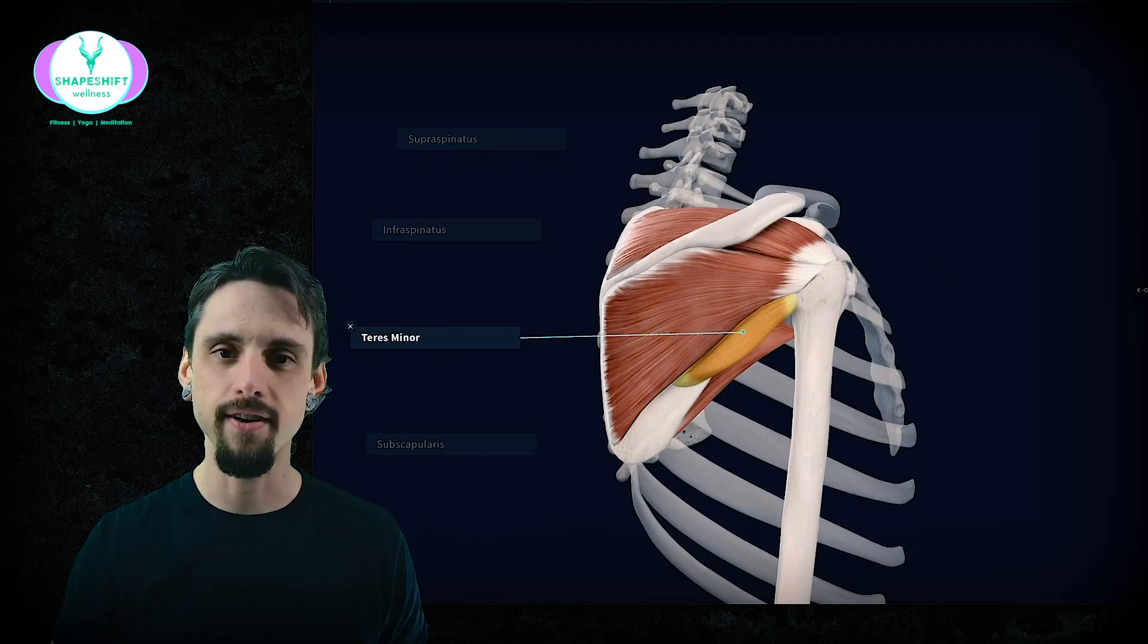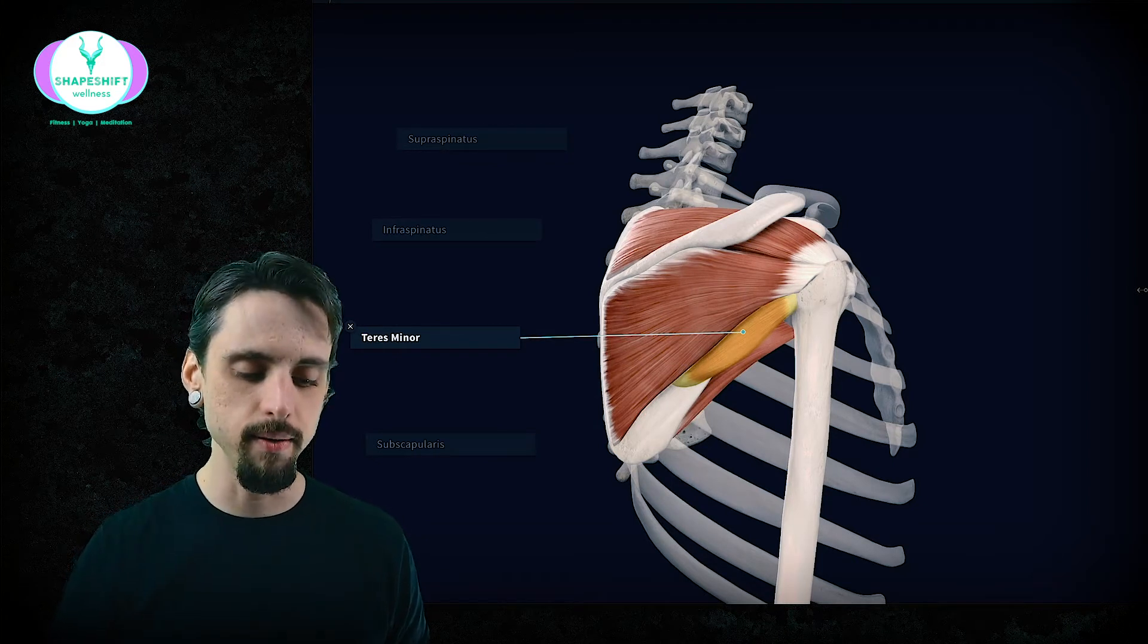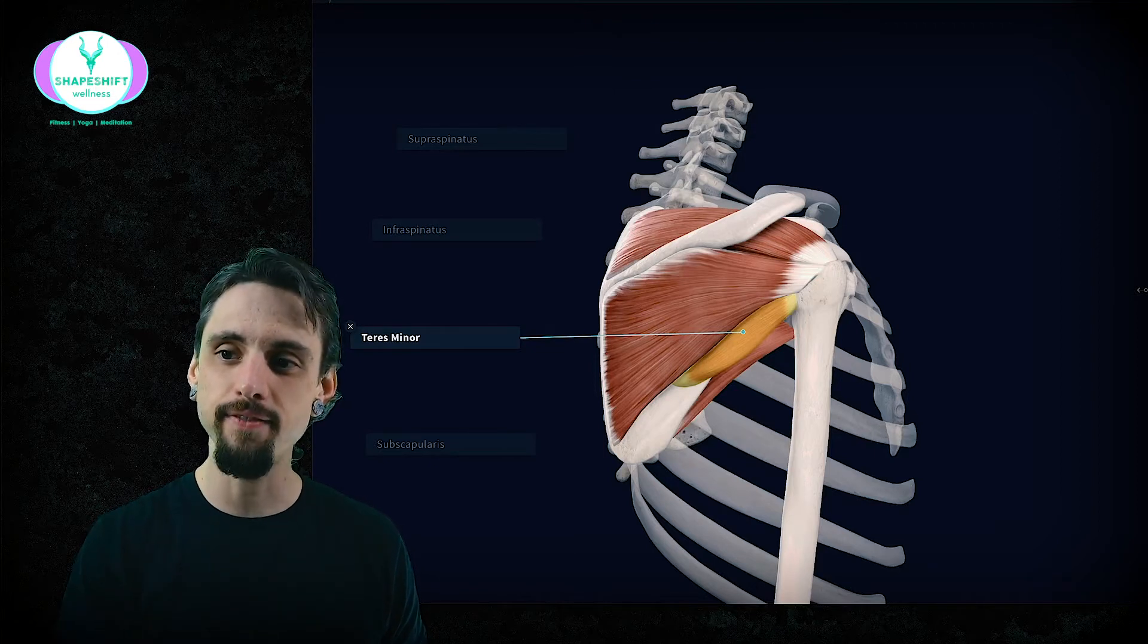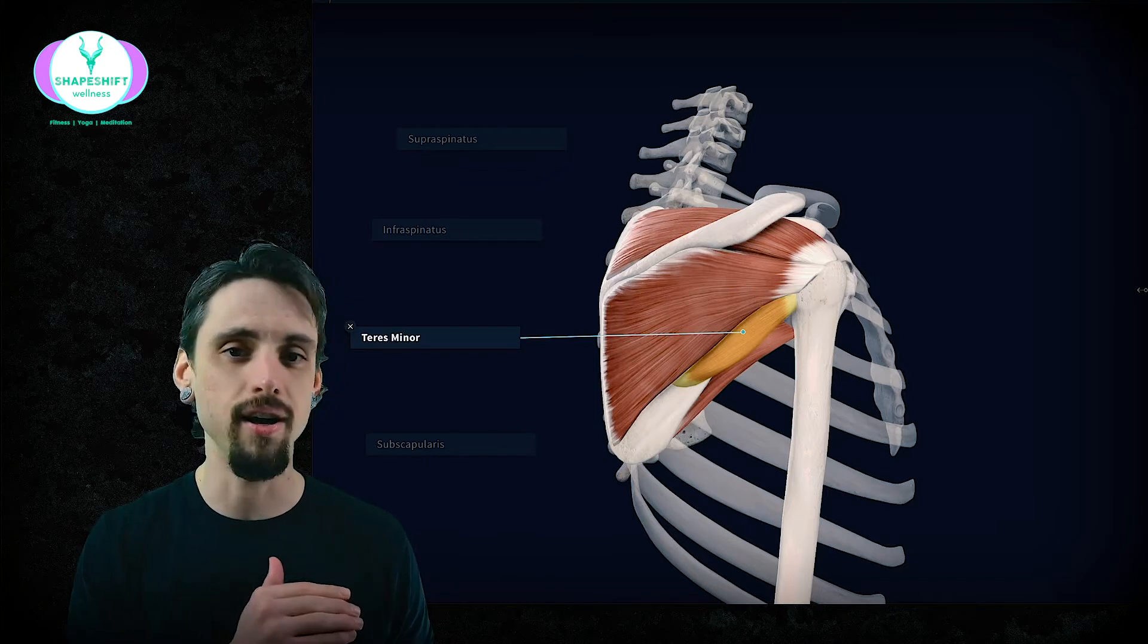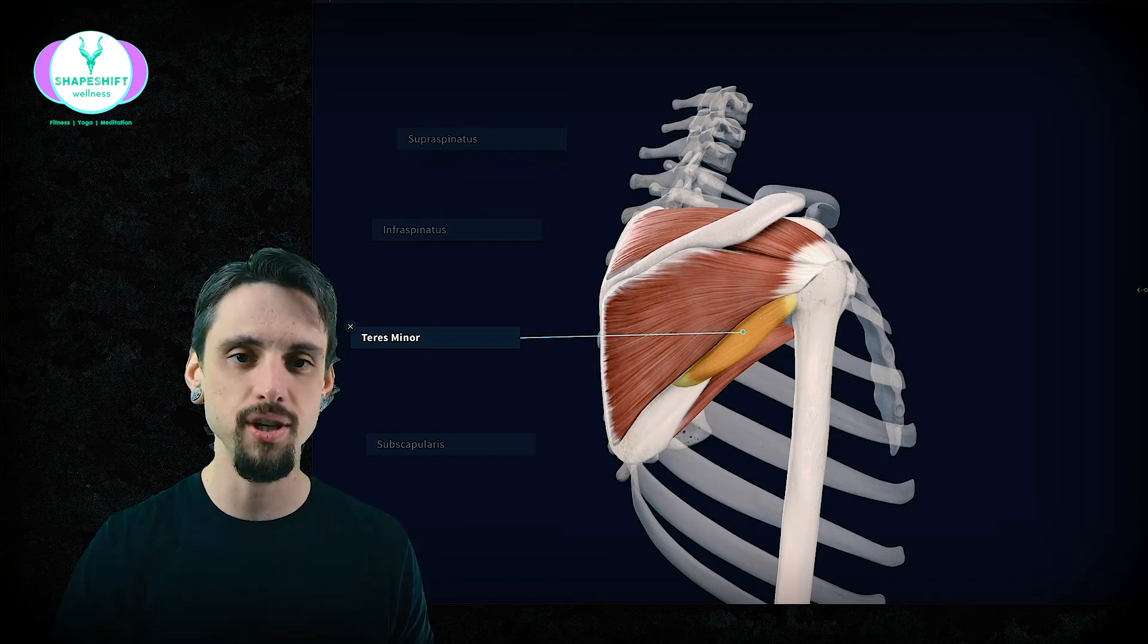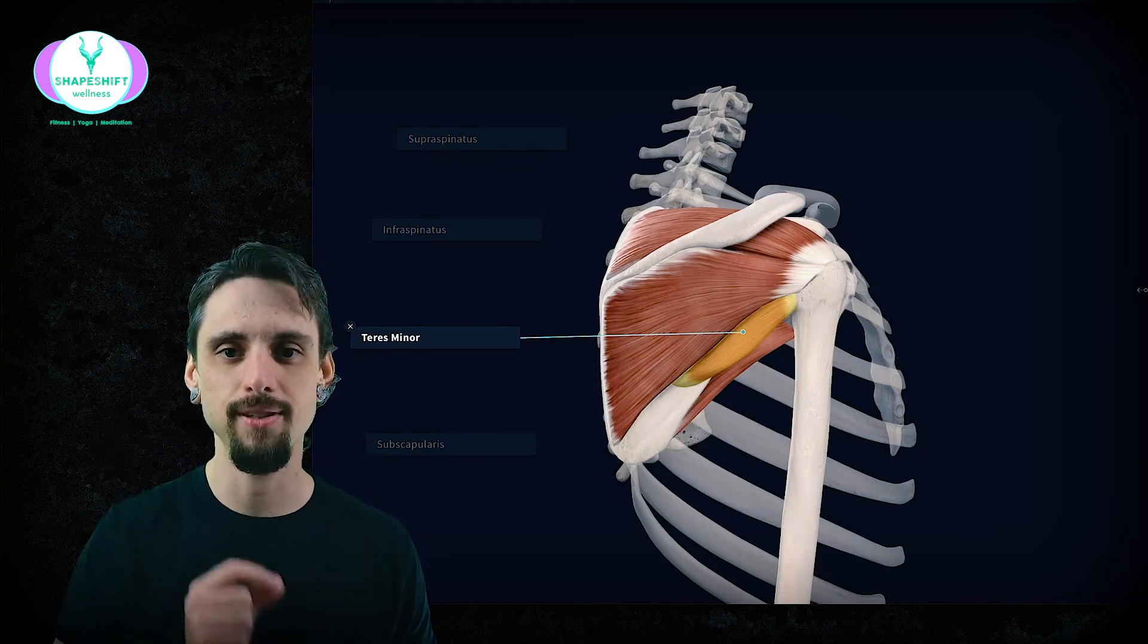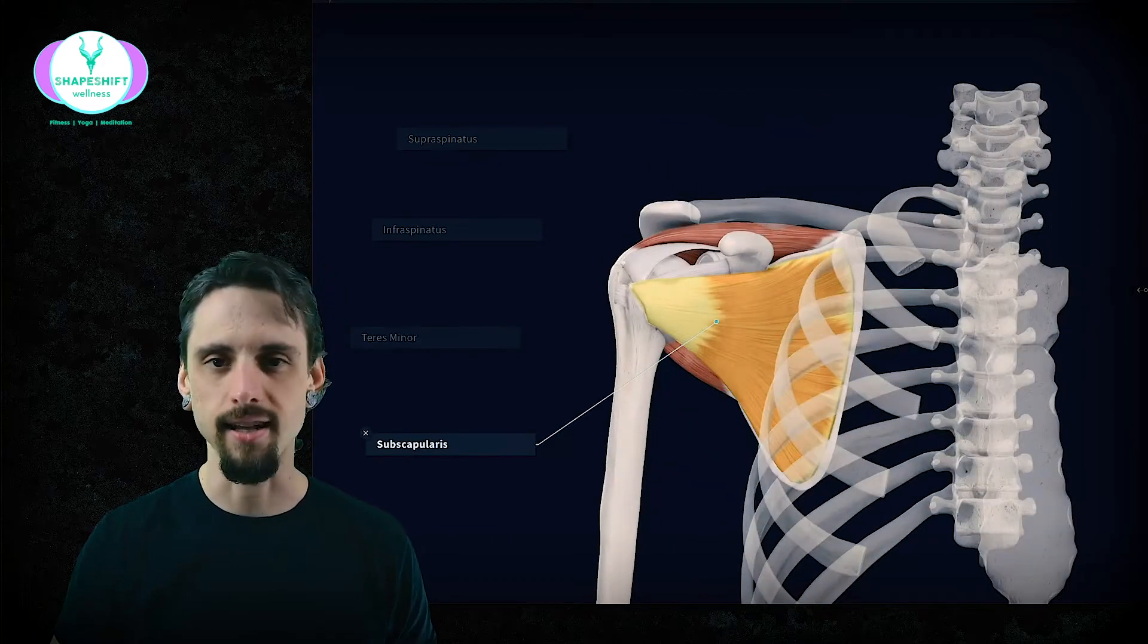Teres minor. I forget the Greek roots on this one, but all I can say is it's just this little buddy. It's infraspinatus's little buddy and it hides right underneath it and it does the exact same thing. It has the exact same function as infraspinatus, it's just a minor muscle, so it does just a little bit less. It's a little less strong.